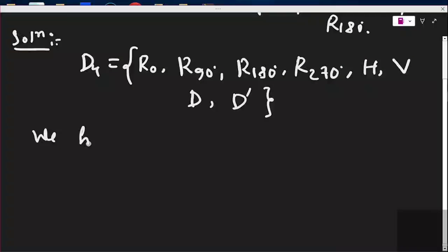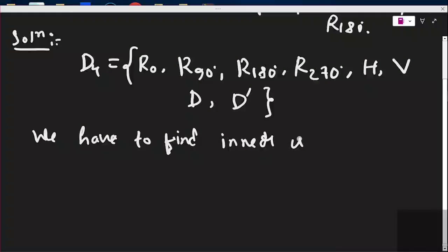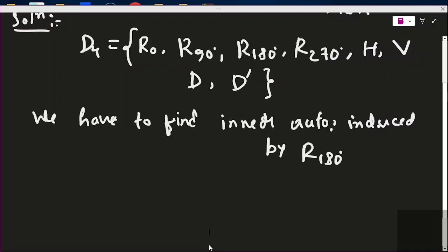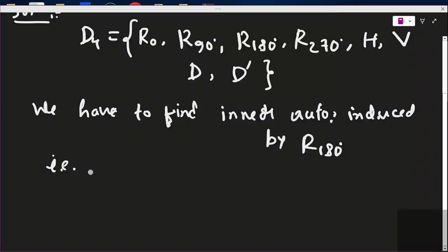We have to find the inner automorphism induced by r180° only. That is, what is phi_{r180°}? This is the automorphism we have to find: phi_{r180°}.